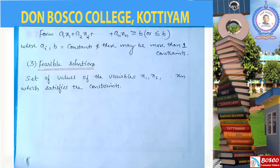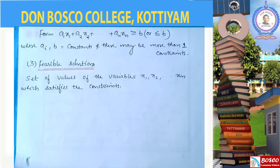A feasible solution is the set of values of the variables x1, x2, up to xn, which satisfies the constraints. We have to obey and satisfy the constraints of the variables x1, x2, up to xn.